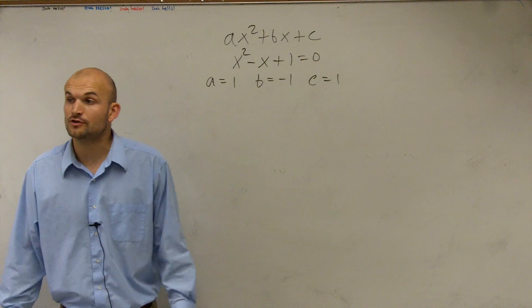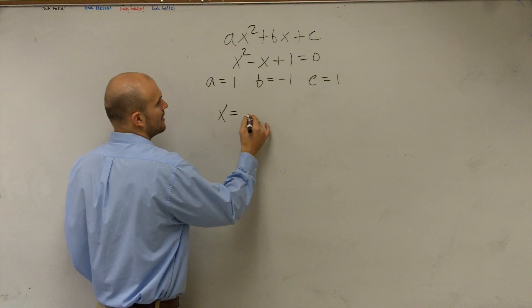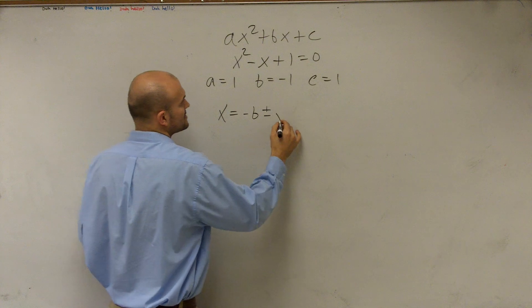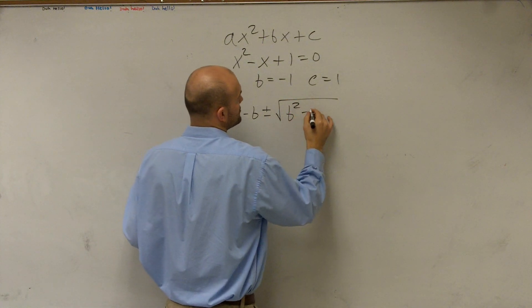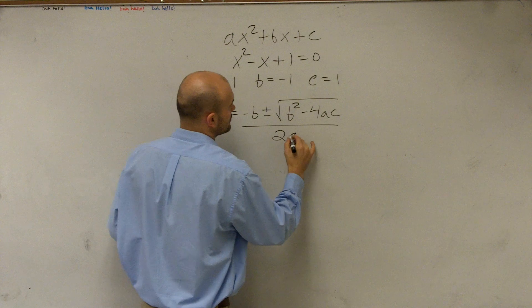Then we now need to write out the quadratic formula. So the quadratic formula is going to be x equals opposite of b, plus or minus the square root of b squared minus 4 times a times c, all over 2 times a.